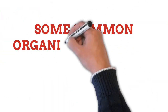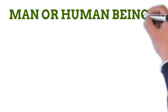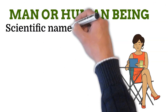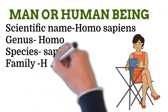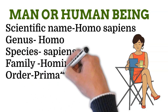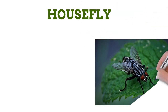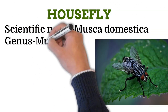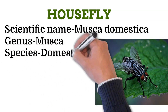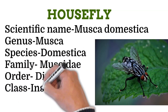Examples of common organisms and their taxonomic classification: First, humans — scientific name Homo sapiens, genus Homo, species sapiens, family Hominidae, order Primata, class Mammalia, phylum Chordata. Likewise, the taxonomic classification of housefly — scientific name Musca domestica, genus Musca, species domestica, family Muscidae, order Diptera, class Insecta, phylum Arthropoda.